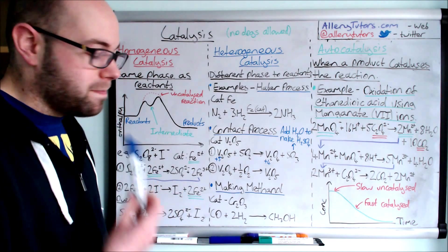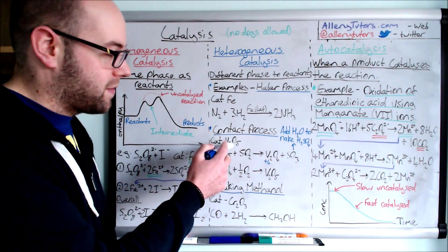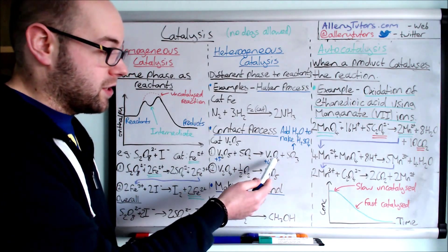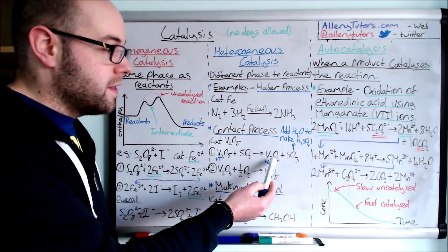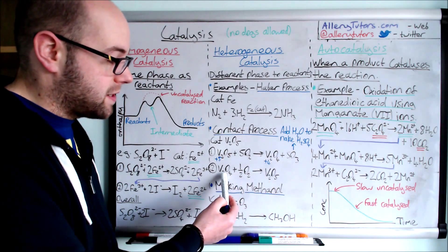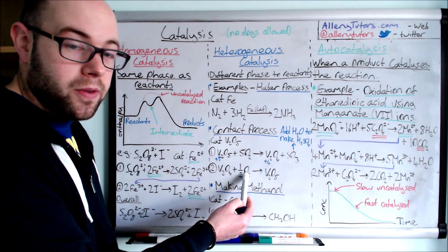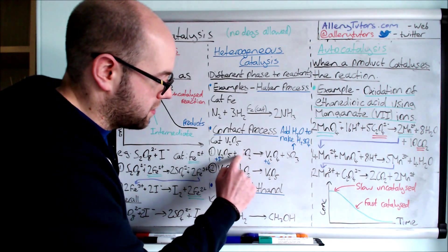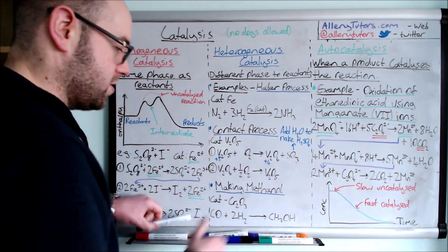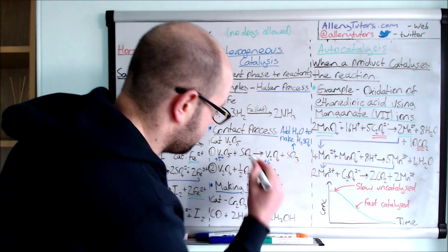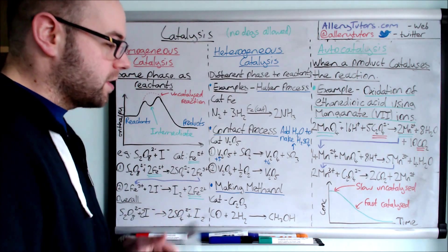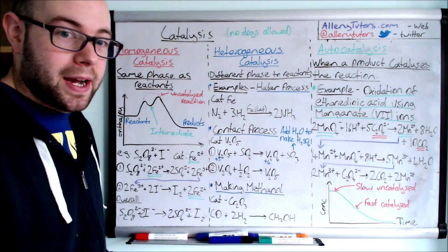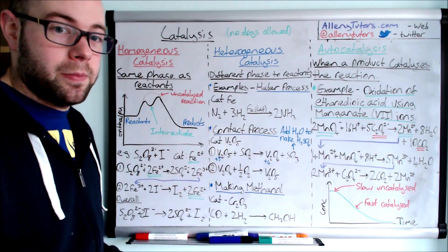Now the biggest problem is we don't have the catalyst. The catalyst has got to be reformed. We're left with V2O4 and the V2O4 then has to react with a half a mole of oxygen to form V2O5. You can see here we've got half O2 reacting with that to reform our catalyst back again. So again useful from an environmental point of view.